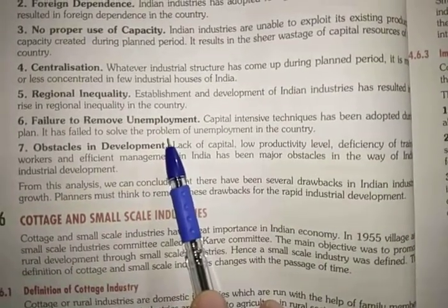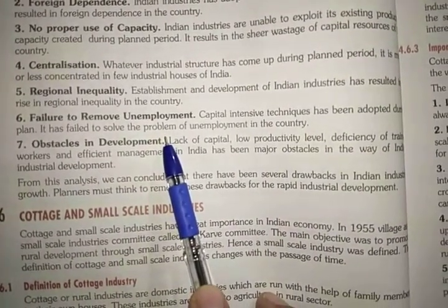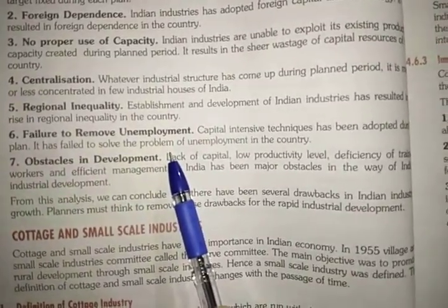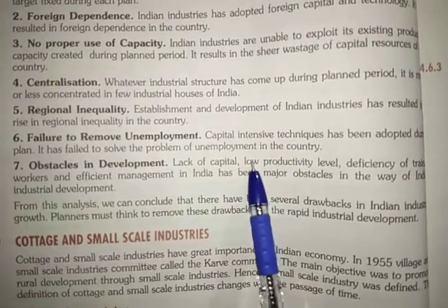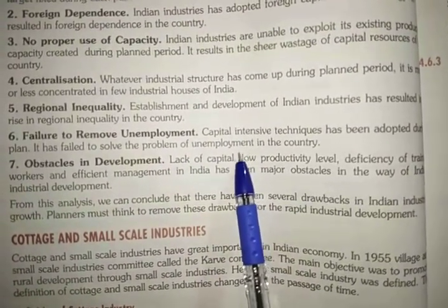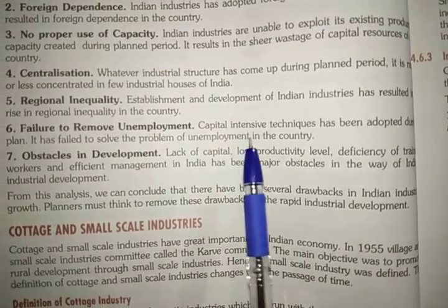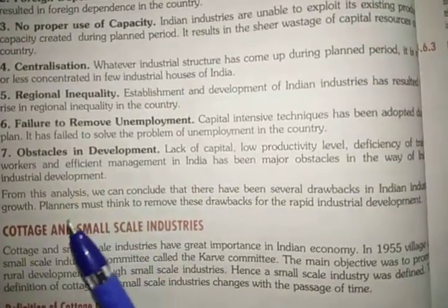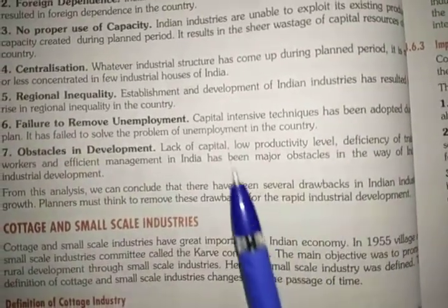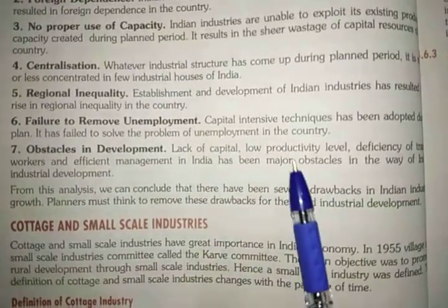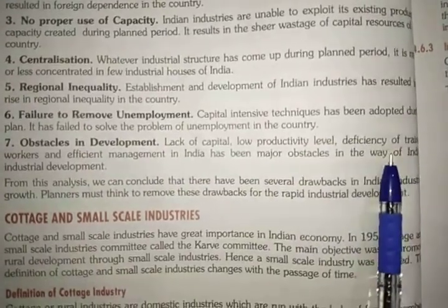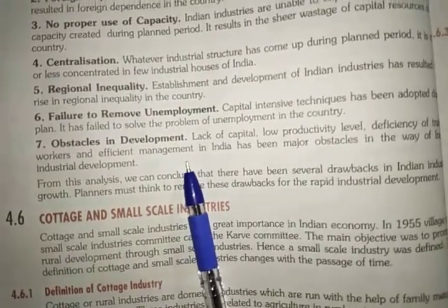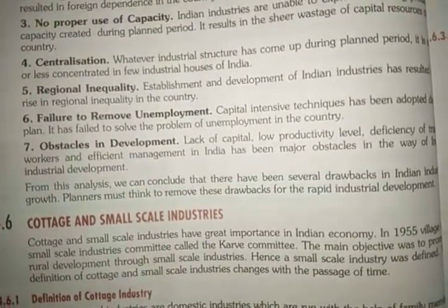Next is failure to remove unemployment. We used capital-intensive industry instead of labor-intensive, so the labor was free with no work, because all work was done by machinery and there was very small need for labor — so people remained unemployed. Last is obstacles in development: India faces obstacles like lack of capital, low productivity level, not knowing how to produce, deficiency of training, and not having enough management skill to face competition in the world.